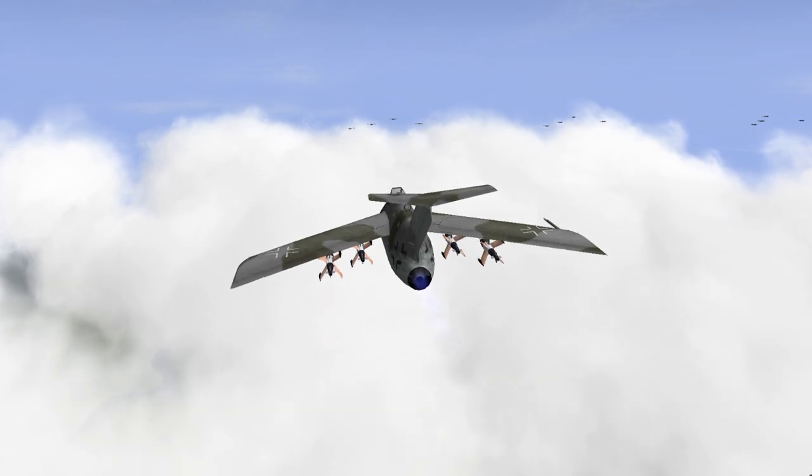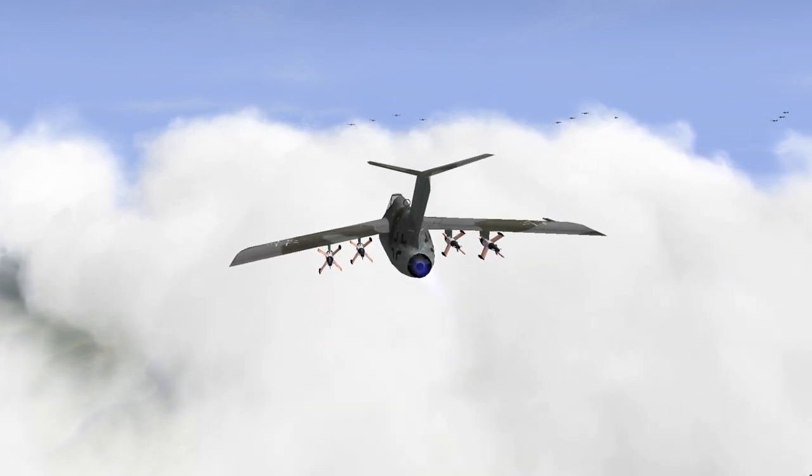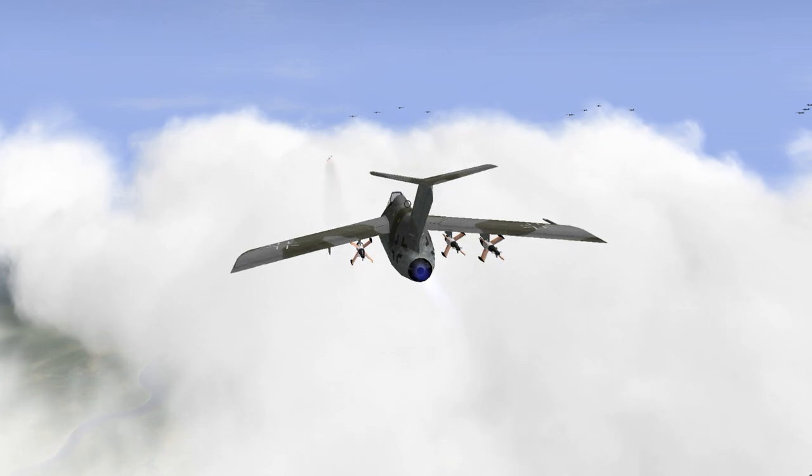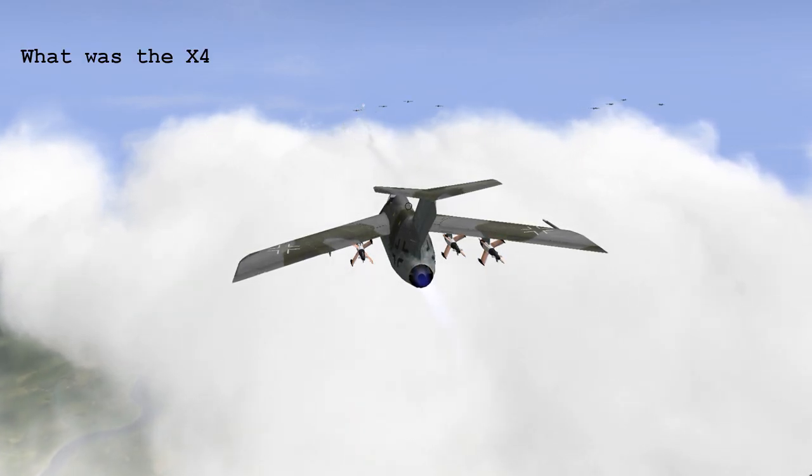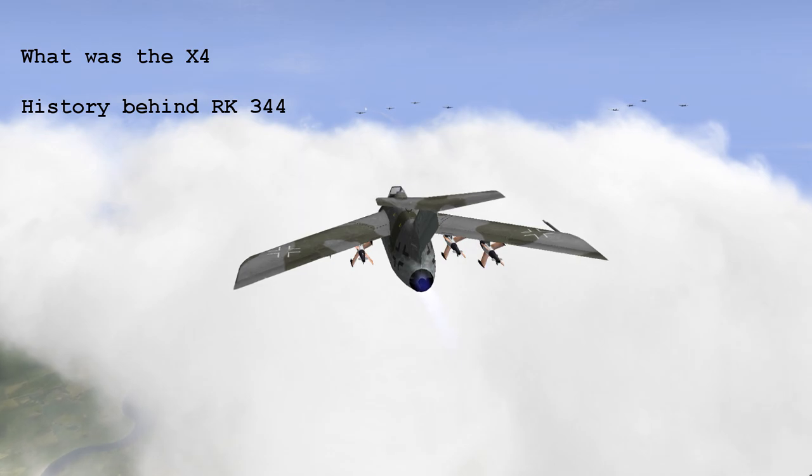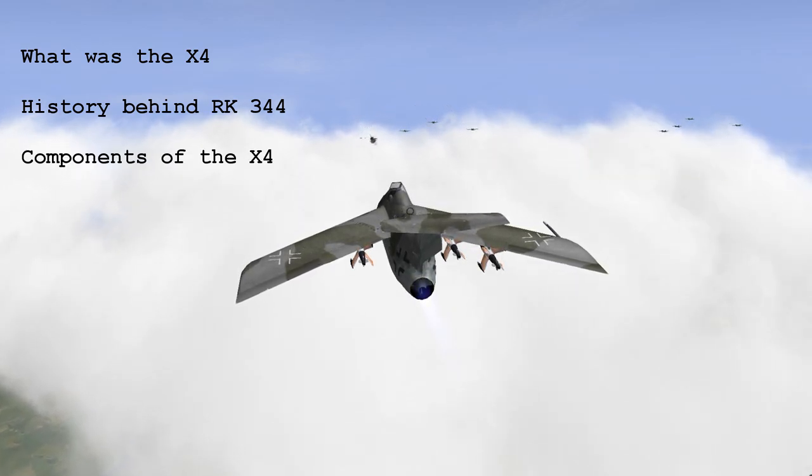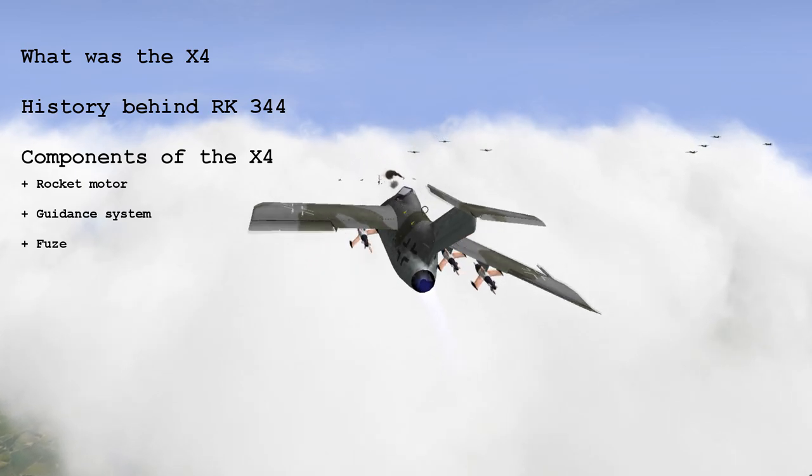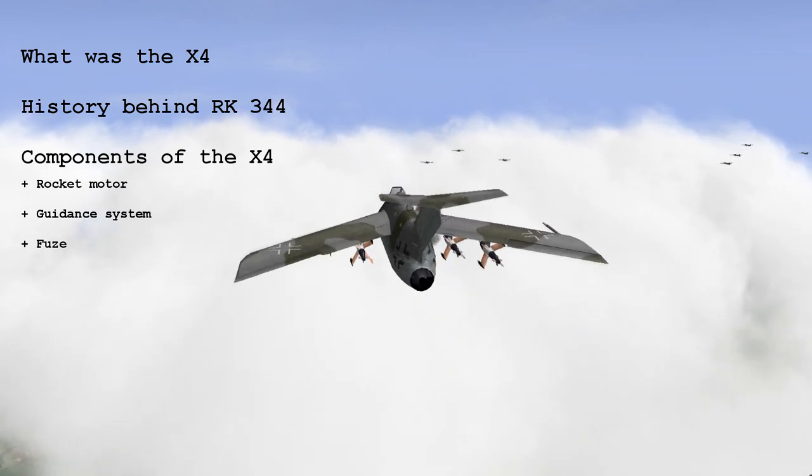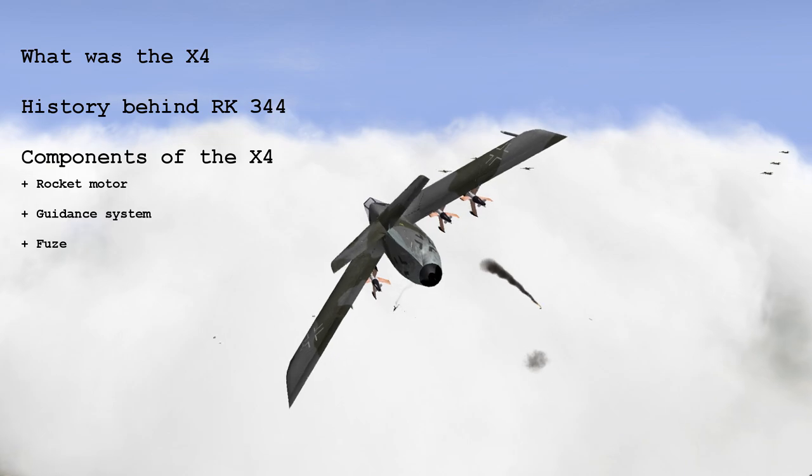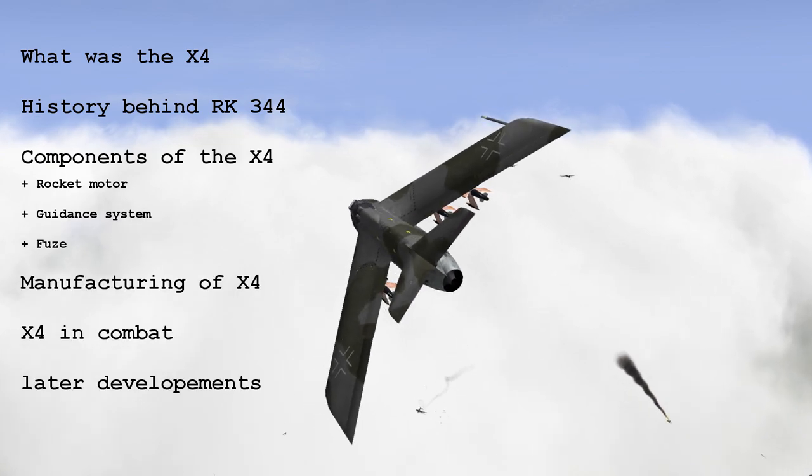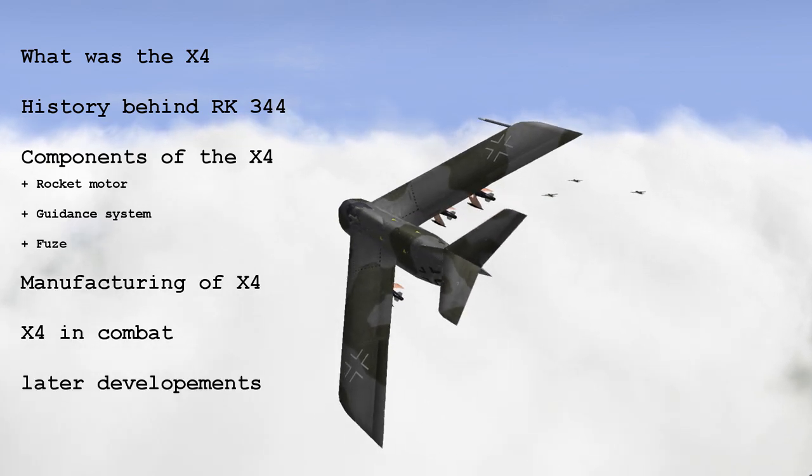Aim of this video is to inform you about the history behind the X4 and how it worked. For this I am going to explain what the X4 was and its historic background. After that I am going to talk about the components of the X4 and how rocket motor, guidance system and the fuse worked. And after that I will explain how the X4 was built and how a successful X4 mission would have looked like.